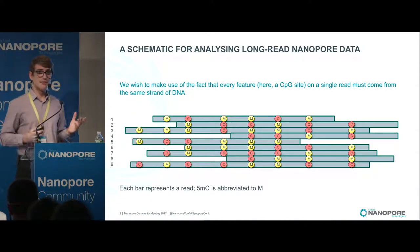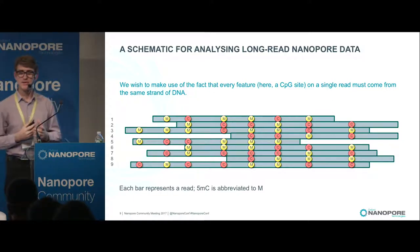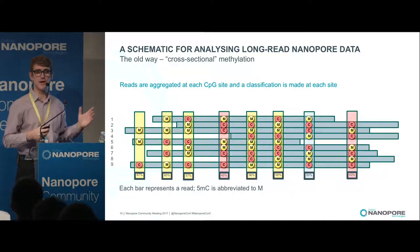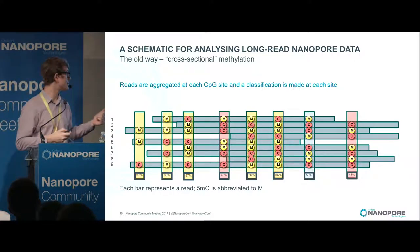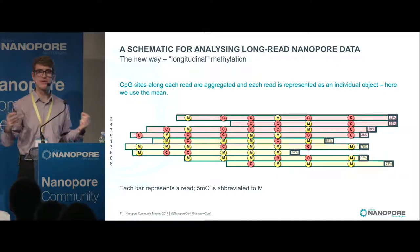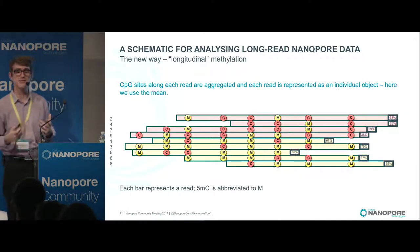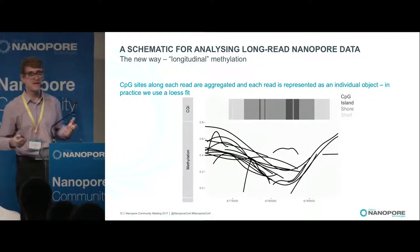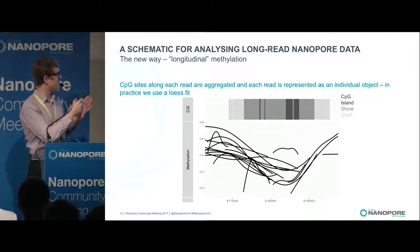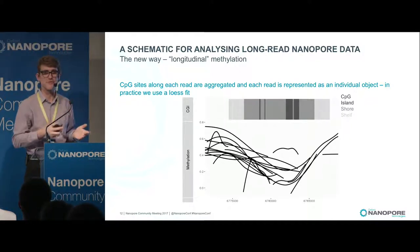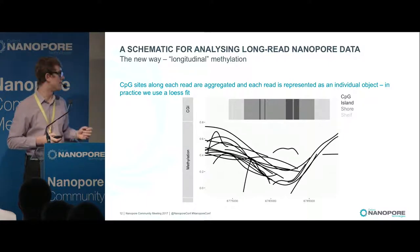A note on methylation: we'd really like to make use of these long reads. A lot of standard protocol uses what I'd call cross-sectional methylation, where you look at a single genomic site and aggregate all reads at that position. What we have instead is what I'd call longitudinal methylation, where we integrate data along a single read from a single DNA strand. In practice, we use a loess fit rather than the average, giving us information within and between reads. For example, a read in the middle that might otherwise confound our analysis when averaging across sites is clearly an outlier.